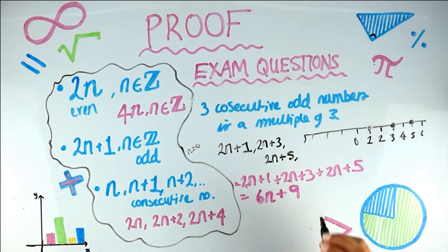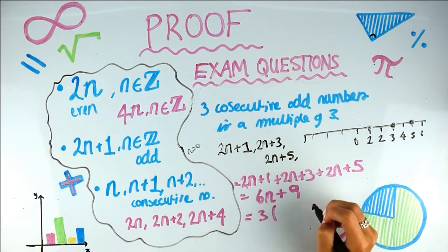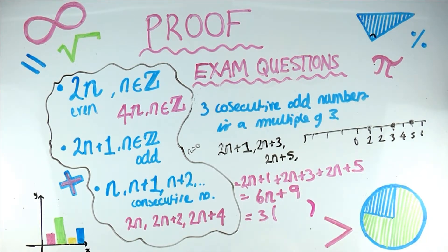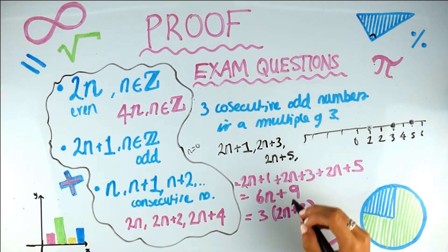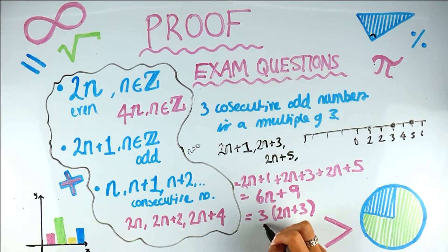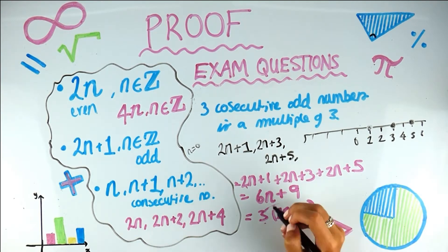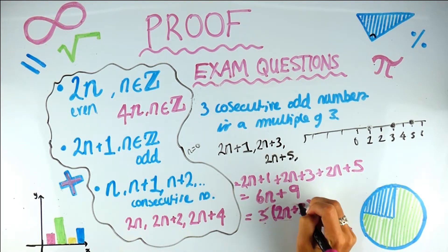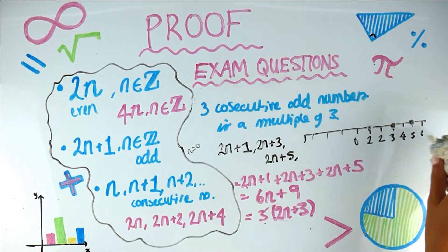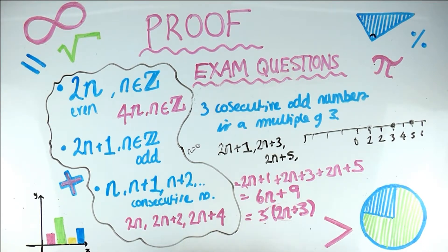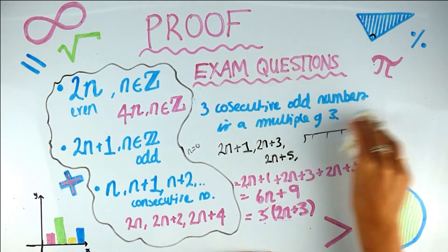We want to end up with a multiple of 3, so we need 3 times something. I notice that 6 and 9 both divide by 3, so factorizing: 3(2n + 3). Expanding to check: 3 × 2n = 6n and 3 × 3 = 9 — that's correct. So we've shown this is a multiple of 3 because it equals 3 times a whole number, and a whole number times a whole number is still a whole number.